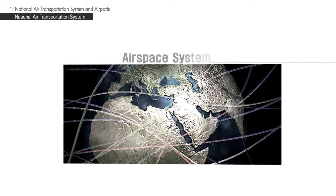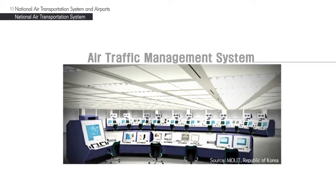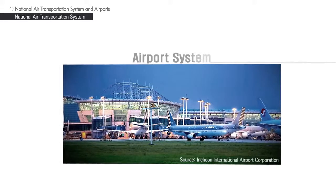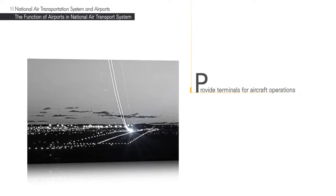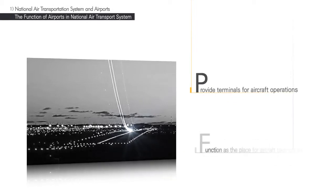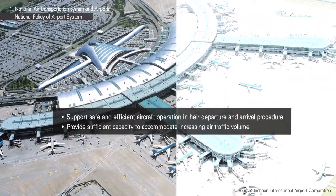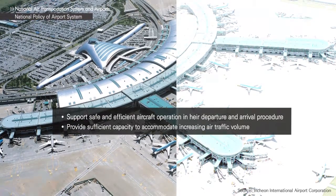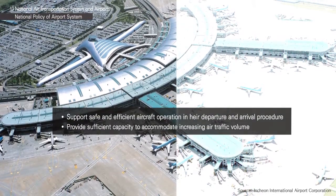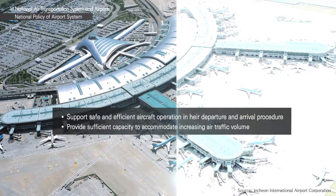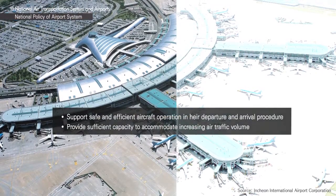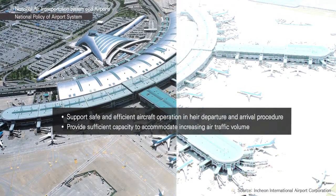The National Air Transportation System consists of the airspace system, the air traffic management system, and the airport system. Airports provide terminals for aircraft operations where aircraft take off and land. Airport system policies must support safe and efficient aircraft operations during their departure and arrival procedure. The National Airport System must also be able to provide sufficient capacity to accommodate the rapidly increasing air traffic volume.